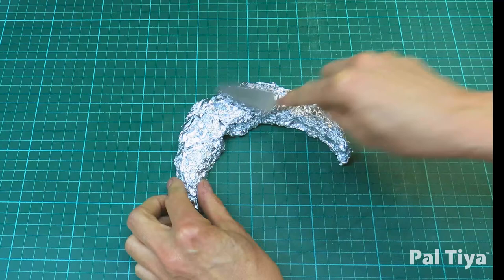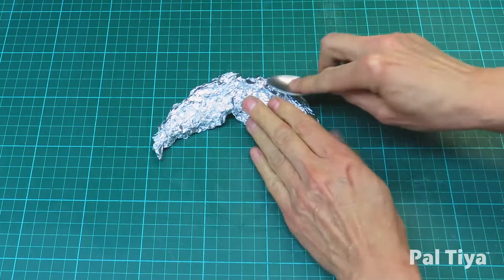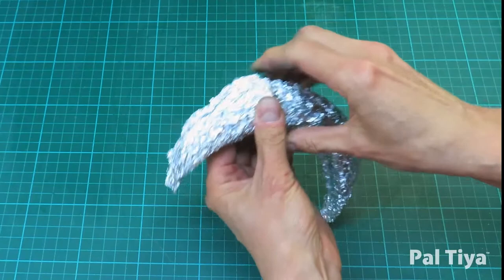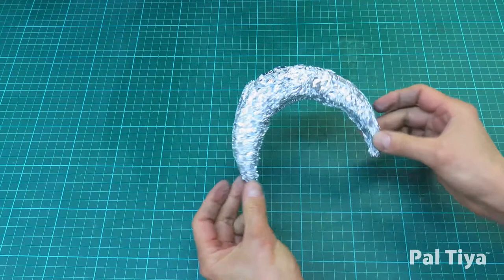Smooth down the edges with a spoon. Once you're happy with your shape, hot glue it onto a square cardboard base.